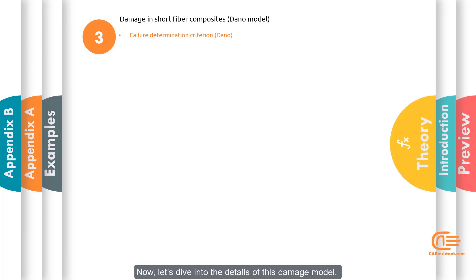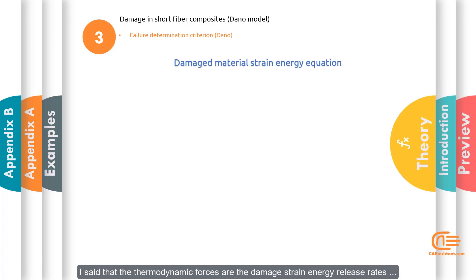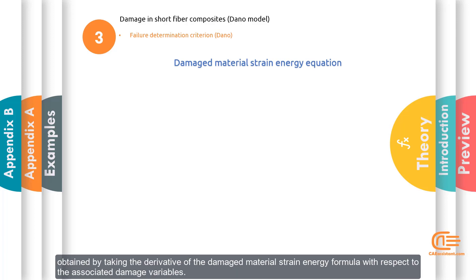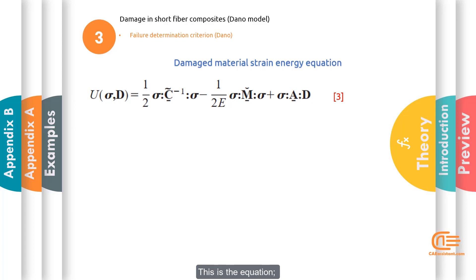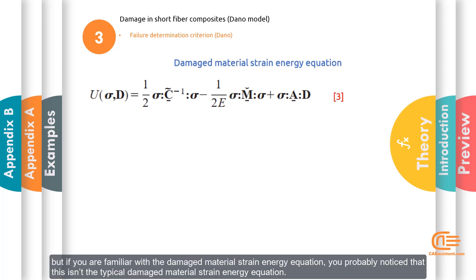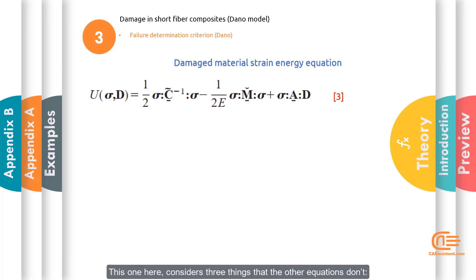Now let's dive into the details of this damage model. The thermodynamic forces are the damage strain energy release rates obtained by taking the derivative of the damaged material strain energy formula with respect to the associated damage variables. Therefore, first we need to see what the damaged material strain energy formula is. This is the equation. But if you are familiar with the damaged material strain energy equation, you probably noticed that this isn't a typical damaged material strain energy equation. This one here considers three things that the other equations don't: anisotropic damage, unilateral effect, and residual effect.